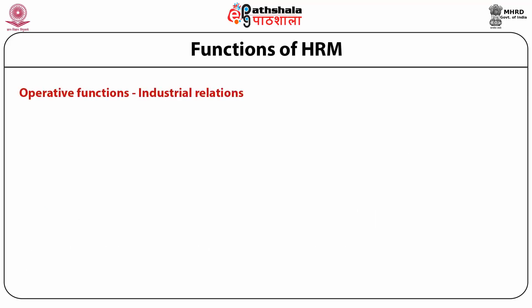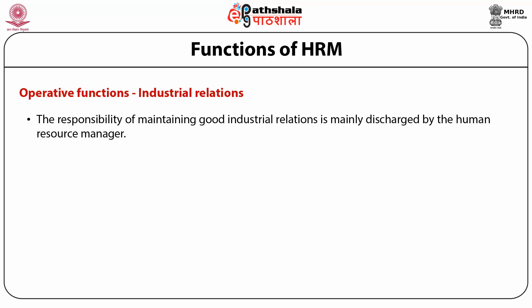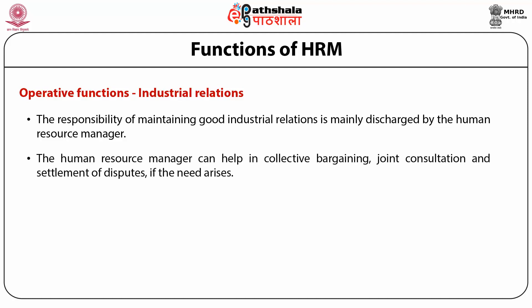Operative function — Industrial Relations: This is a very important function of HRM. The responsibility of maintaining good industrial relations is mainly discharged by the human resource manager. The HR manager can help in collective bargaining, joint consultation and settlement of disputes. He can do a great deal in maintaining industrial peace, as he is deeply associated with various committees on discipline, labor welfare, safety and grievance. He helps in laying down the grievance procedure to redress grievances and conveys the trade union leaders' views on labor problems to top management.